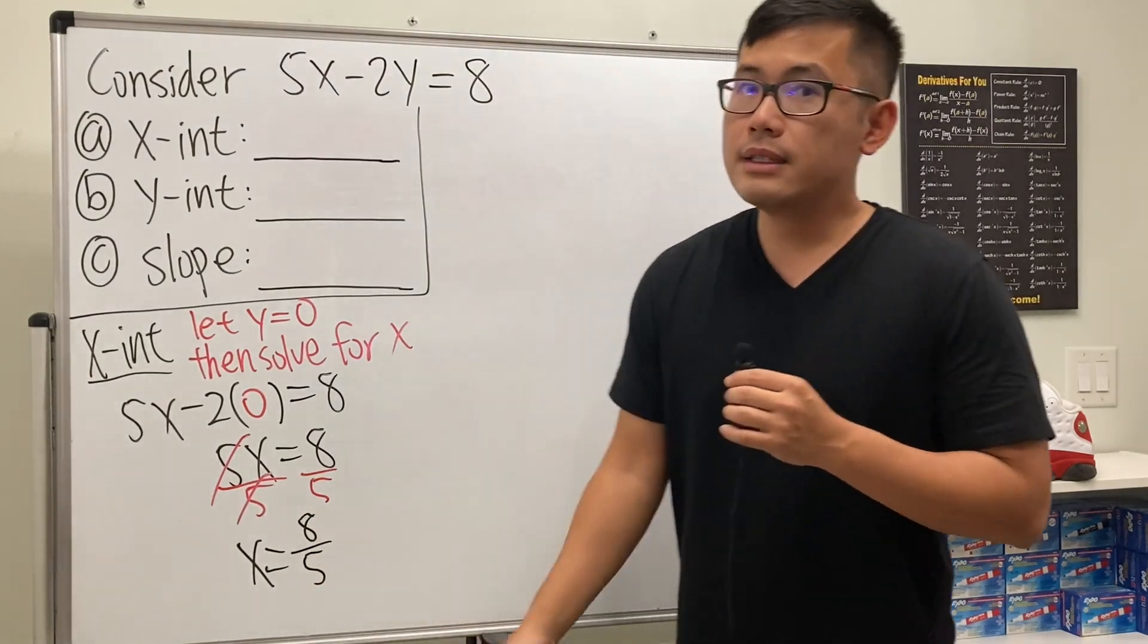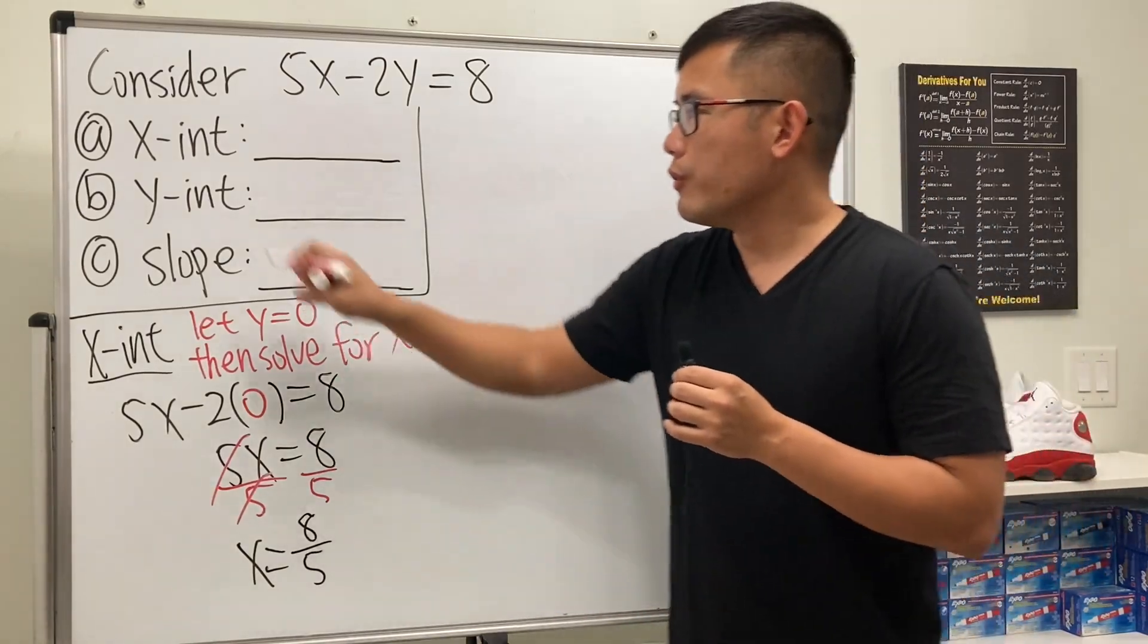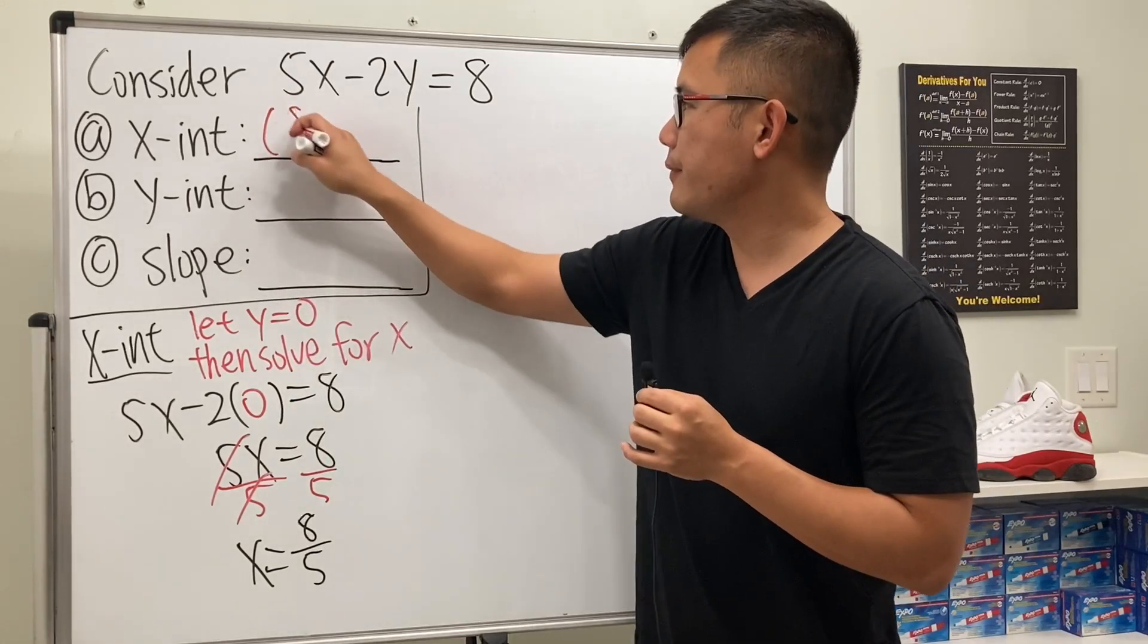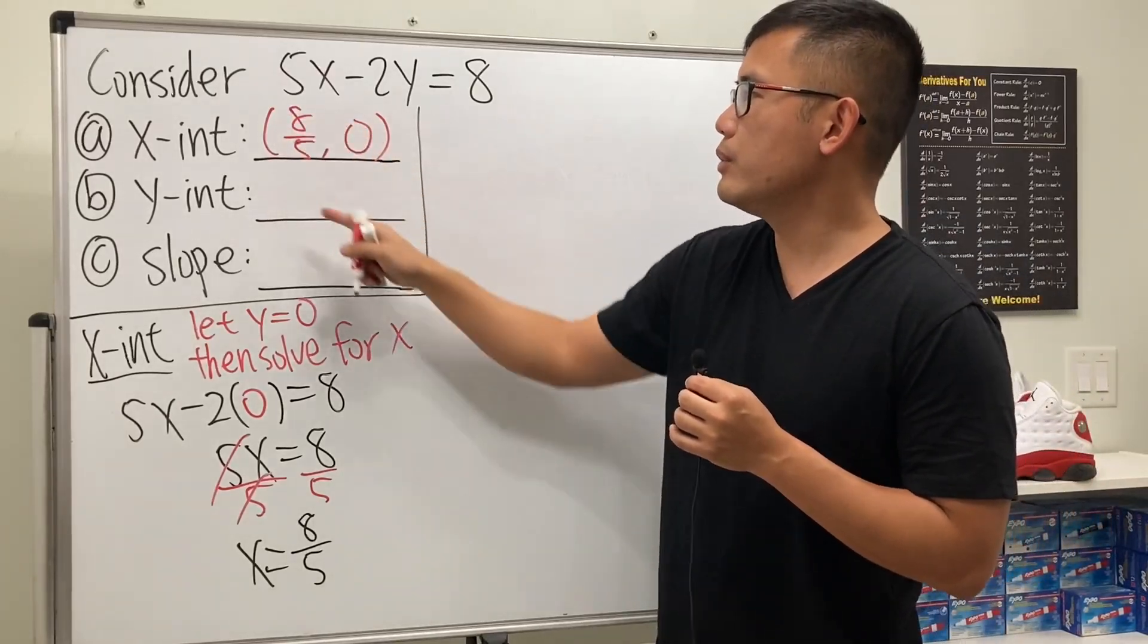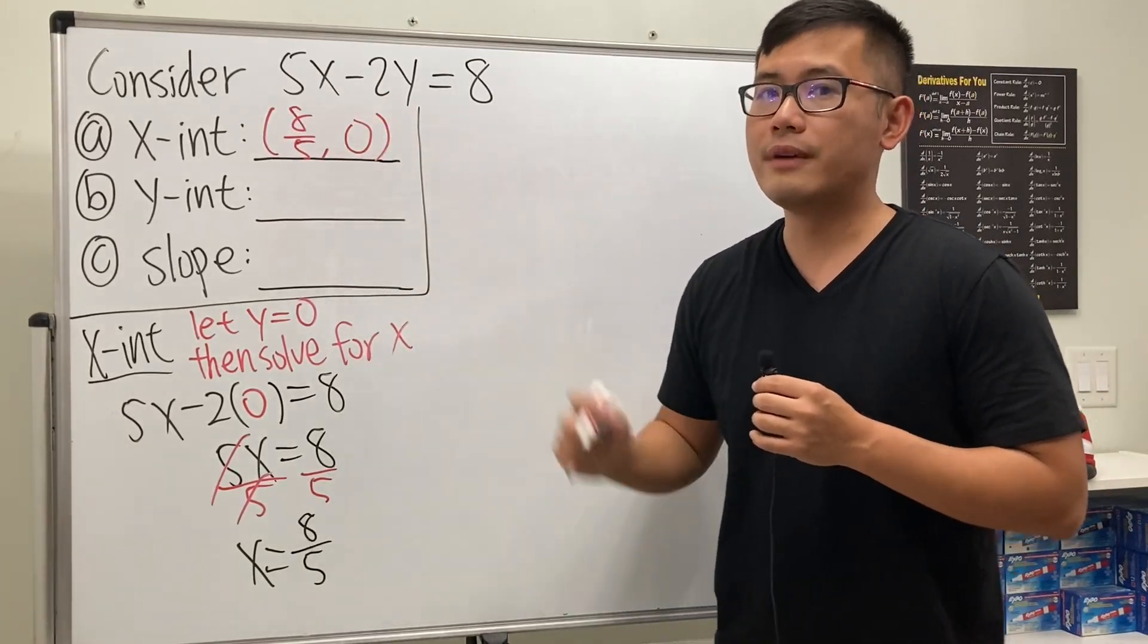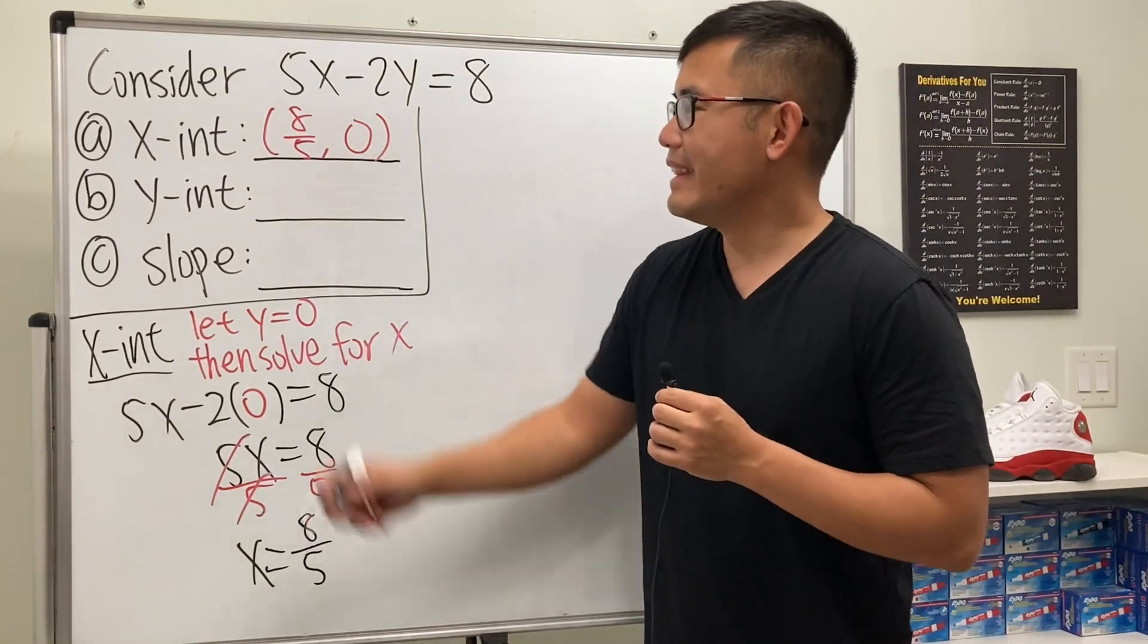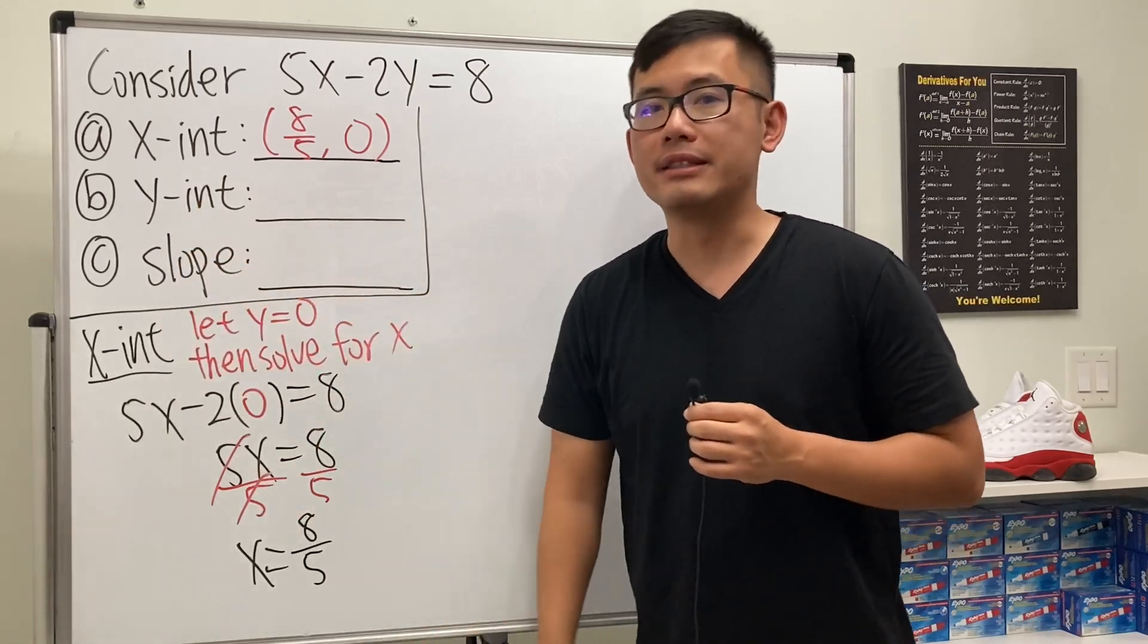So this is the x-value for the x-intercept. I'll write the answer as (8/5, 0) because this is the point—the x-value—and it shows that the y-value is zero. Next, we'll find the y-intercept and slope at the same time.